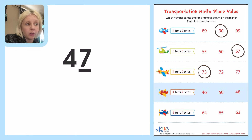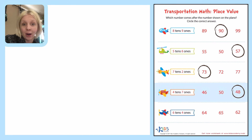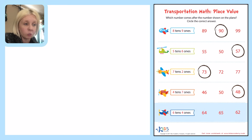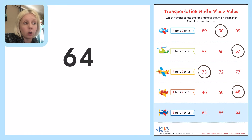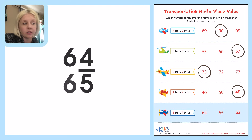The next one is 4 tens and 7 ones. Looking at the ones place: what comes after seven? Eight. The four stays the same, so 47 becomes 48 — circle it. The last one is 6 tens and 4 ones. What comes after four? Five. The six stays the same, so 64 becomes 65. Great job!